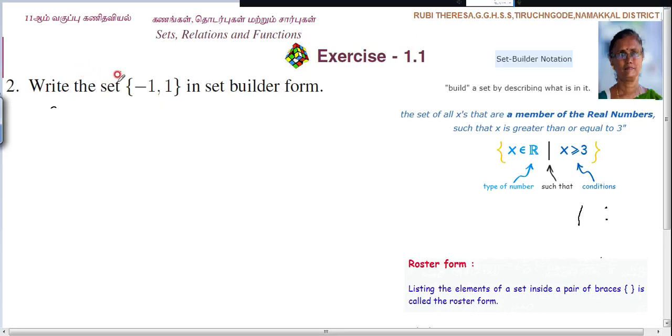Now listen here, write the set {-1, 1} in set builder form. So this is given in roster form.